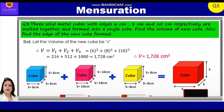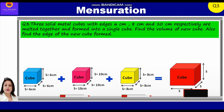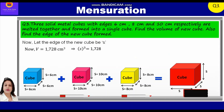Let the edge of the new cube be s. Volume is already calculated as 1728 centimeter cube. This implies s cube is equal to 1728. Therefore s is the cube root of 1728. Factorizing 1728 as 12 into 12 into 12, the cube root is equal to 12. Therefore, the edge of the new cube thus formed is 12 centimeter.